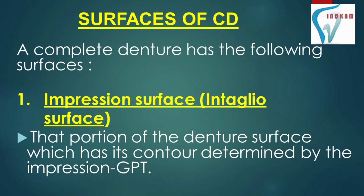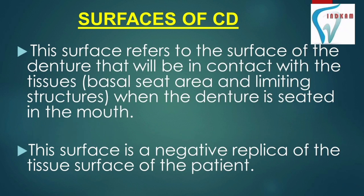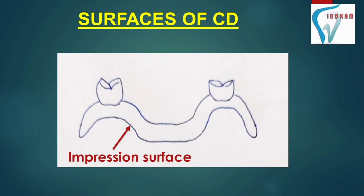The first surface is the impression surface, also known as the intaglio surface. It is that portion of the denture surface whose contour is determined by the impression. This is the surface of the denture that will be in contact with the tissues when the denture is sitting in the mouth, such as the basal seat area and limiting structures. This surface is a negative replica of the tissue surfaces of the patient.